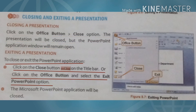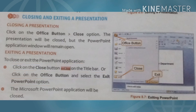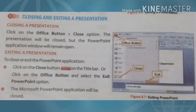To close or exit the PowerPoint application entirely, click on the Close button on the title bar, or click on the Office button and select the Exit PowerPoint option. या तो title bar पे Close button पे click करें, application close हो जाएगी, या Office button से Exit PowerPoint option select कर सकते हैं — जिसको click करने से Microsoft PowerPoint application पूरी तरह close हो जाएगा।